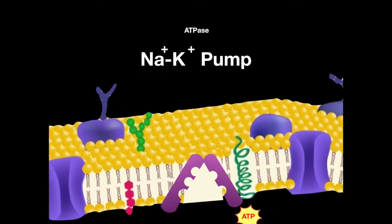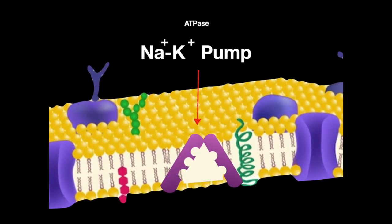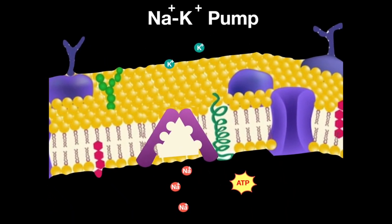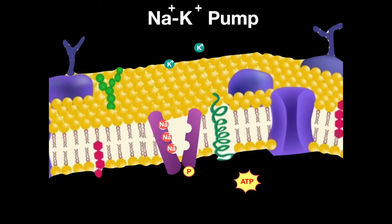The sodium-potassium pump is an ATPase that is located on the plasma membrane. One ATP on the cytosolic side phosphorylates the pump, which then pumps three sodium ions out of the cell. The phosphate is released, and two potassium ions are pumped into the cell.